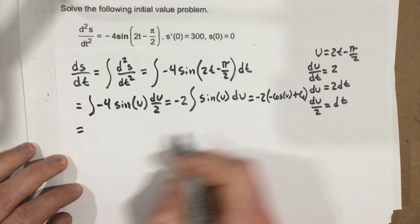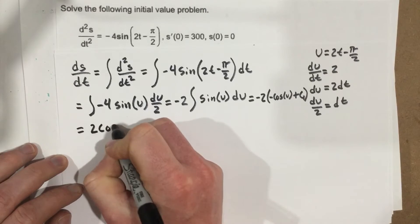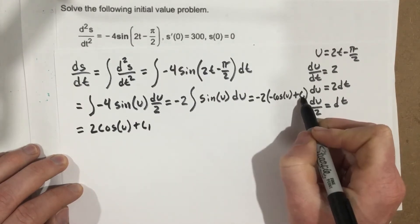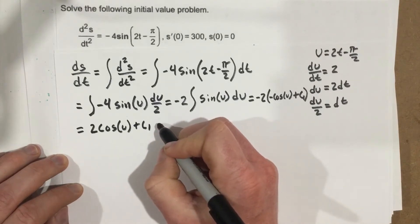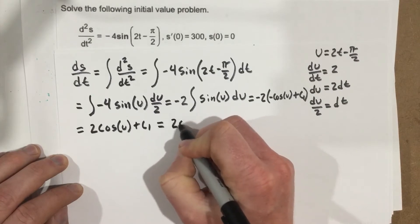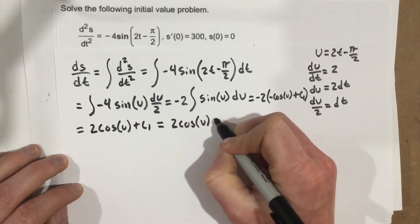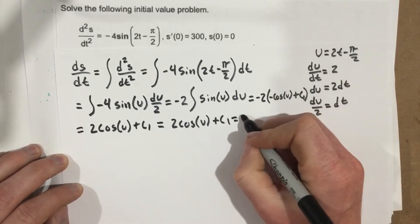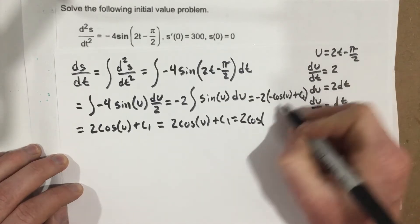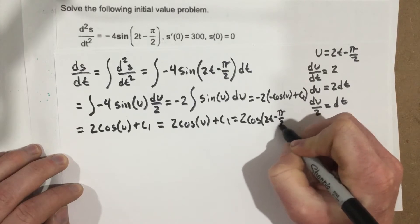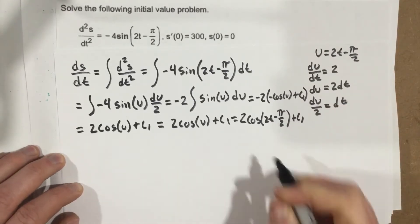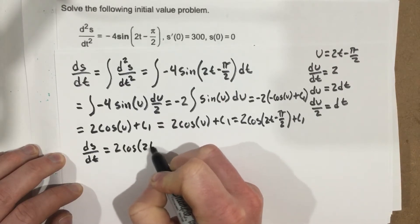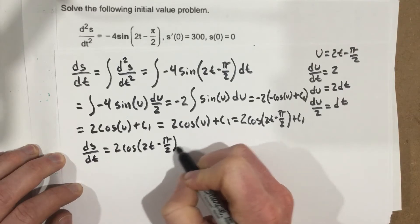That simplifies to 2 cosine u plus c1, since a constant times a constant is just a constant. Plugging u back in, we get 2 cosine of 2t minus pi over 2 plus c1. So ds/dt equals 2 cosine of 2t minus pi over 2 plus c1.